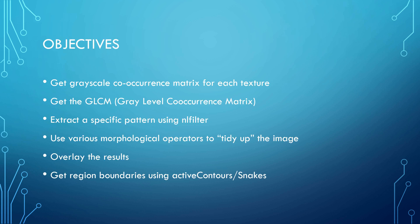There's the objective: get the gray-scale co-occurrence matrix, get the GLCM, get the specific pattern using a window operation NL filter, tidy up the image using various morphological operators, overlay the results, and then use active snakes to display the results again.